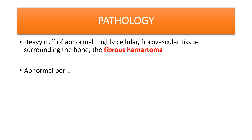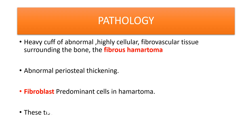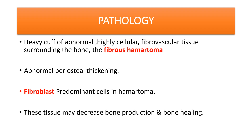There is abnormal tissue called fibrous hamartoma, which is composed of a heavy cuff of abnormal, highly cellular fibrovascular tissue. The bone, periosteum, and surrounding tissues are also abnormal. Fibroblasts form the main cell population in fibrous hamartoma, which is the pathological lesion present in congenital pseudarthrosis of the tibia, because it decreases bone production and adversely affects bone healing.